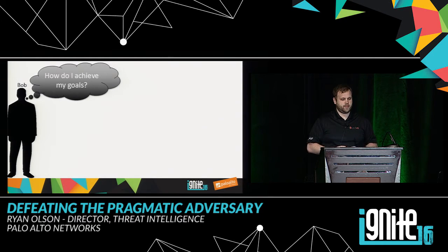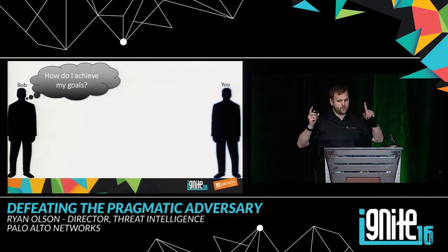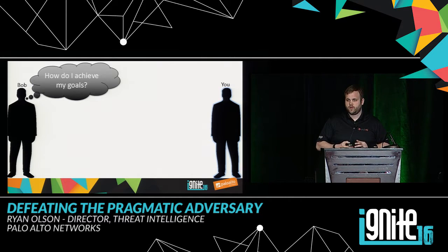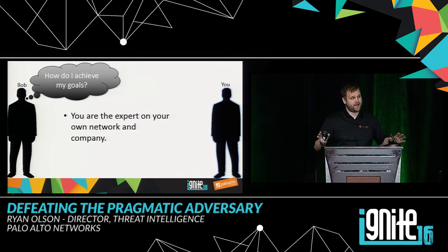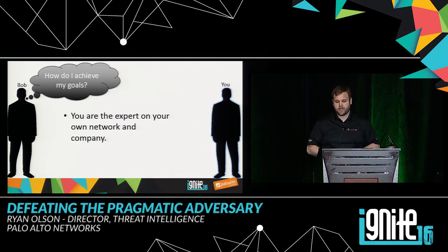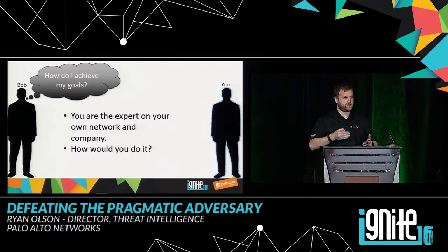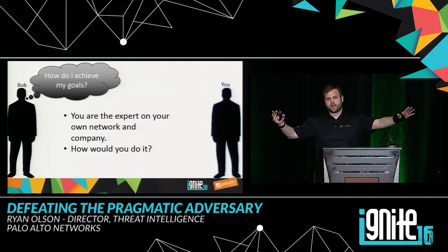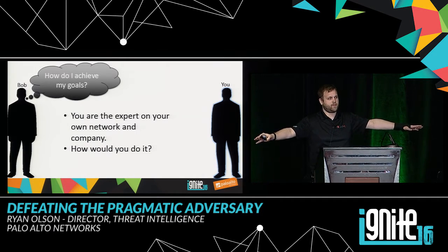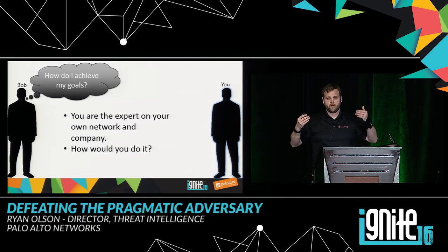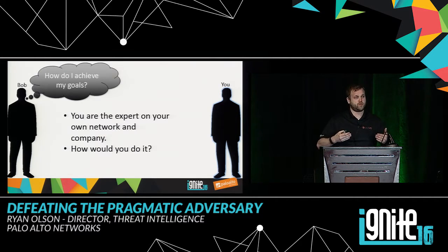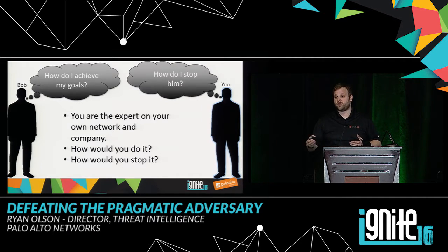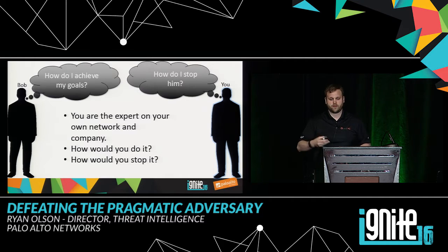As we go through this, Bob on the left is always thinking about how to achieve his goals. You guys in the audience — every one of you — are an expert in your network. You know your networks better than Bob does. As Bob looks at how to attack his target, think about how you would do that phase of the attack lifecycle in a pragmatic way. Not from the perspective of what supercomputer the NSA has, but as yourself, the person who knows your network. Then think about how you would stop yourself from compromising your own network.